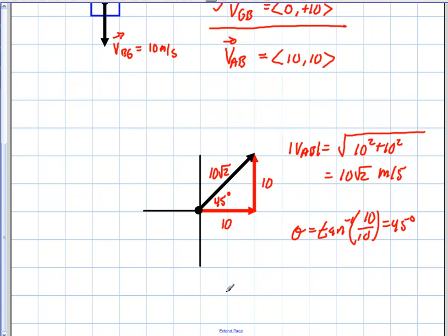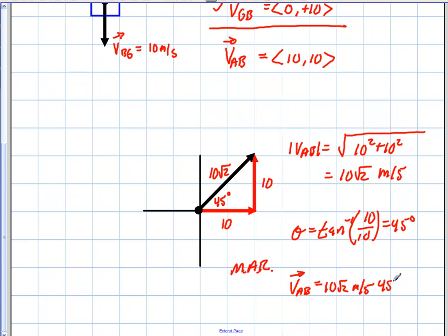Remember: vectors are magnitude, angle, and reference — MAR. So the relative velocity of A with respect to B is 10√2 meters per second at 45 degrees north of east, or simply northeast. We've now found the relative velocity in both unit vector notation and in terms of magnitude, angle, and reference.